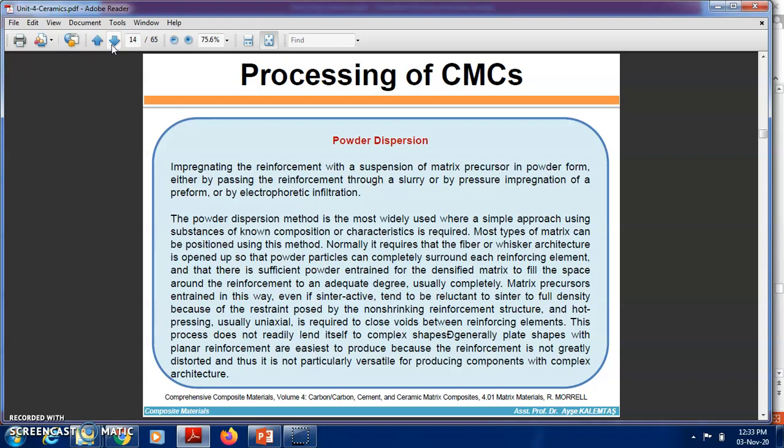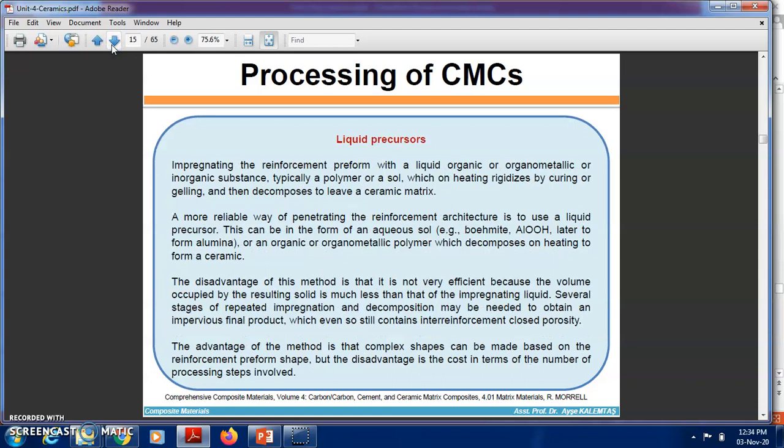Liquid precursors impregnate the reinforcement preform with a liquid organic, organometallic, or inorganic substance, typically a polymer or salt, which on heating gels by curing or gelling and then decomposes to leave a ceramic matrix. This can be in the form of an aqueous salt, for example boehmite (AlOOH) later forming alumina, or an organic or organometallic polymer which decomposes on heating to form a ceramic.